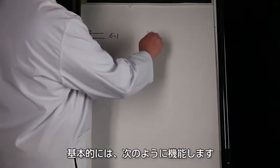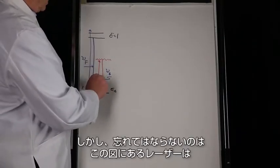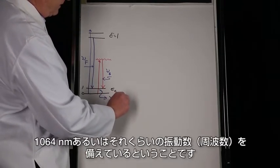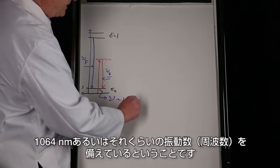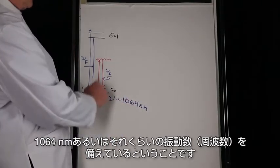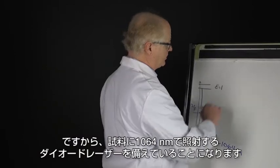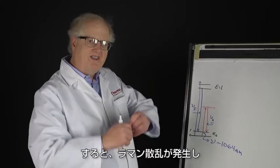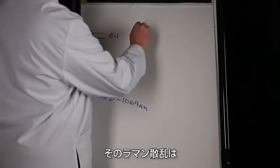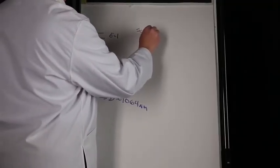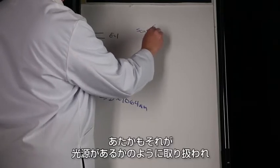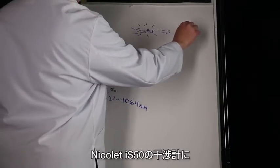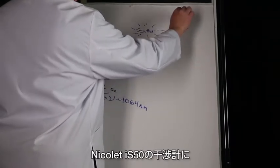This laser now has a frequency of, or it is, 1064 nanometers. You have a diode laser that shines onto the sample at 1064, then the Raman scatter comes off and that Raman scatter is treated as if it was a source and that's fed right into the interferometer.